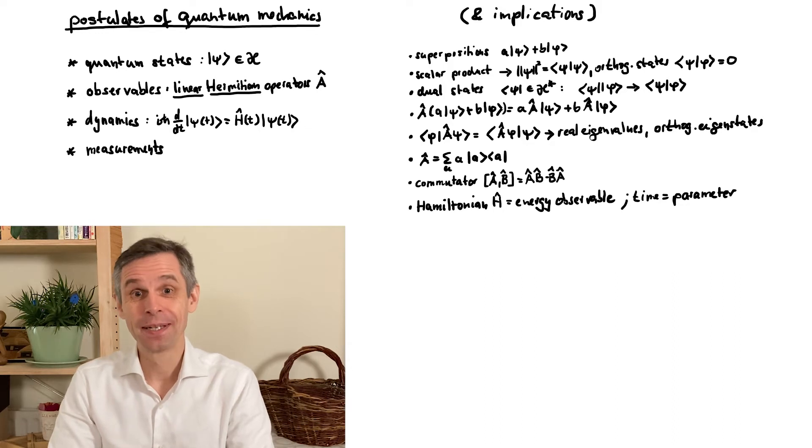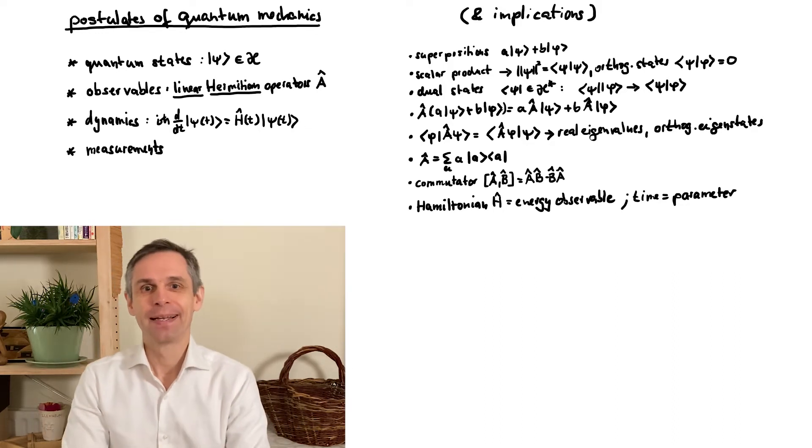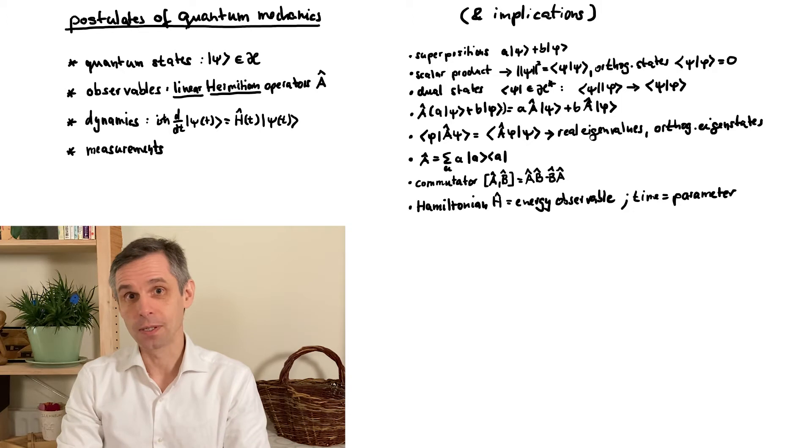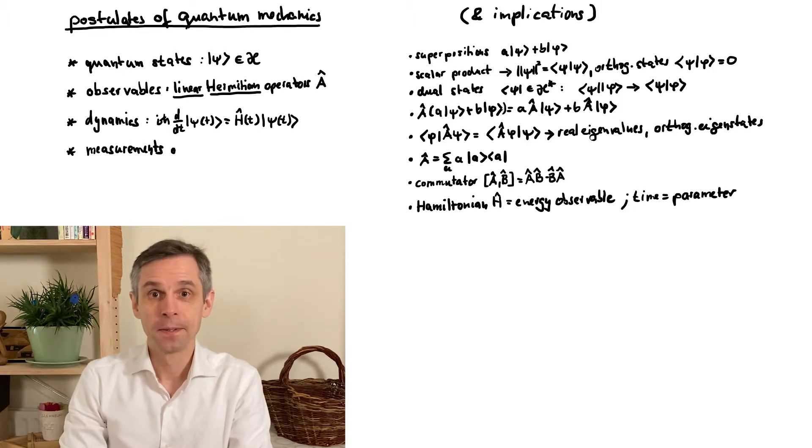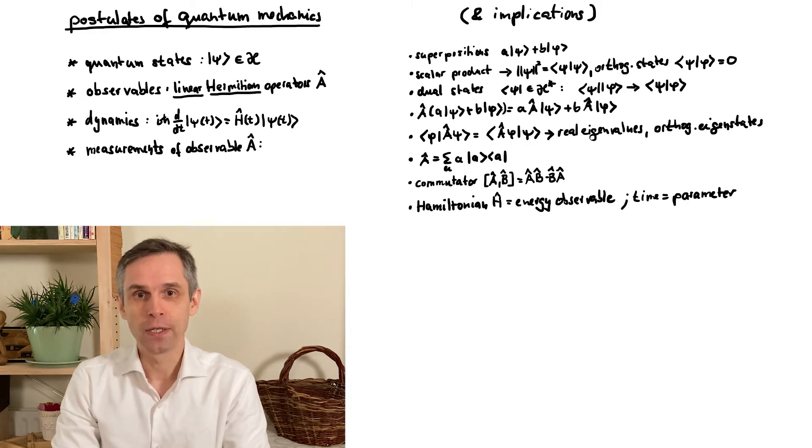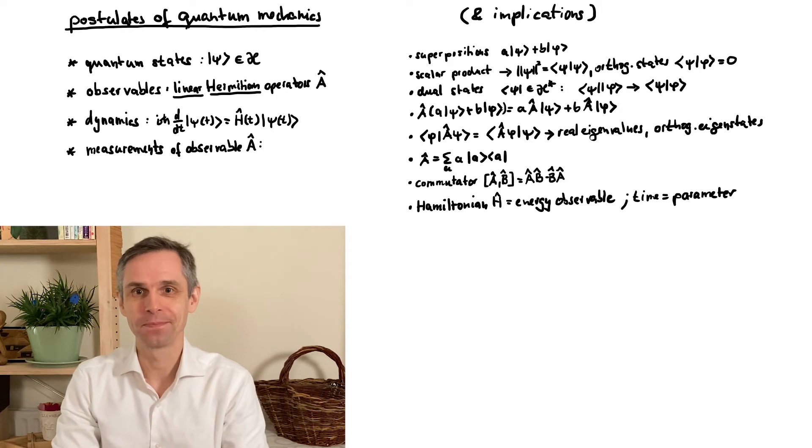So now comes the last postulate, which is really the one that gives sense to all the other aspects. And that's the rule of how we use them to make predictions about such systems. It consists of several parts. Firstly, measurements concern observables. So to any operators, you can assign an observable, as defined in the second postulate.